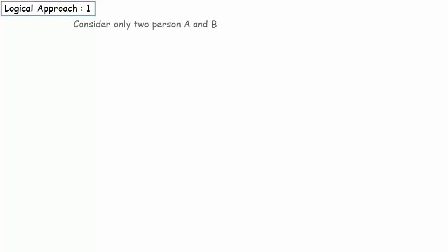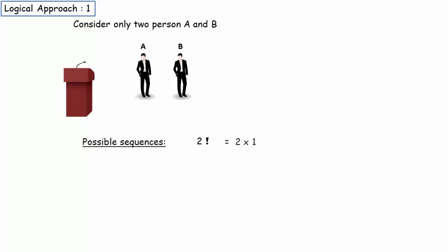Consider only two persons A and B. The number of possible sequences in which they can speak is 2 factorial. That's 2. What's the probability that A speaks before B? That's simply number of valid sequences divided by total number of sequences. That's 1 by 2.